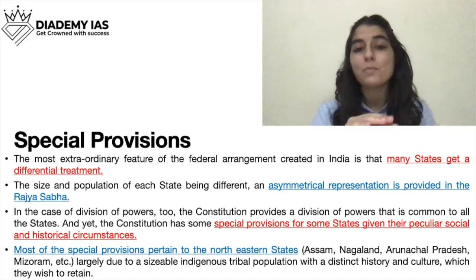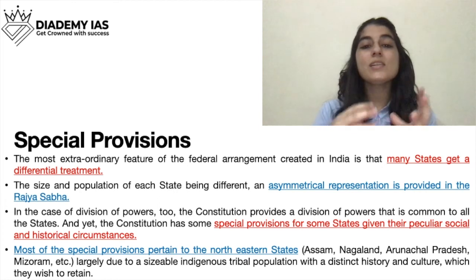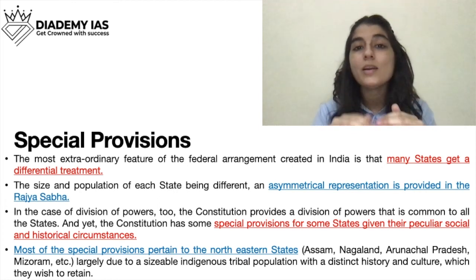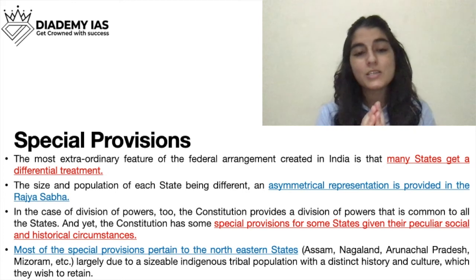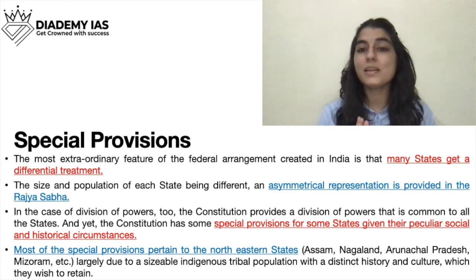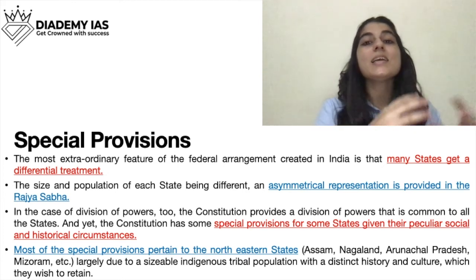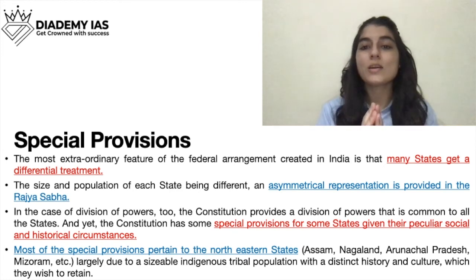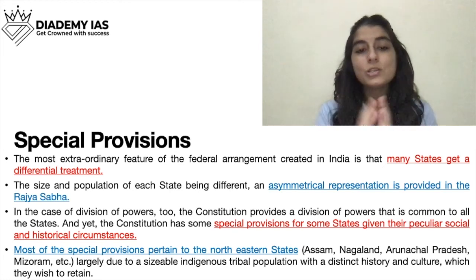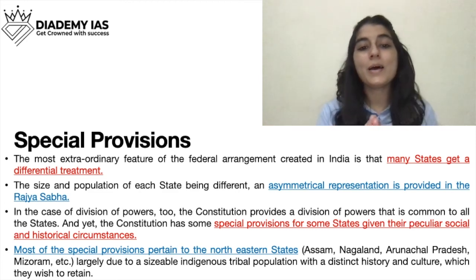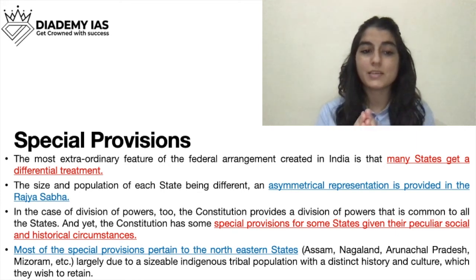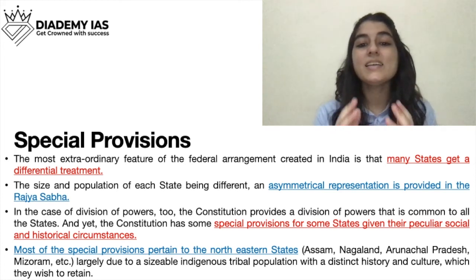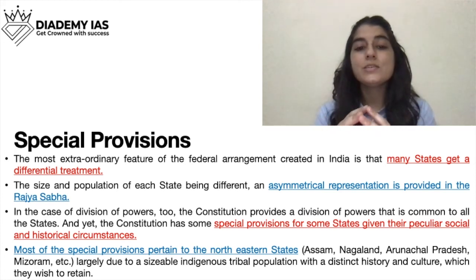Next is special provisions for certain states. While the center is strong, some states have been given special provisions due to their cultural distinctions. States with more population have more quota in certain areas. Northeastern states like Assam, Nagaland, Arunachal Pradesh, and Mizoram - largely due to their sizable indigenous tribal population with a distinct history and culture - have been given special provisions. These will be studied in detail in upcoming classes.